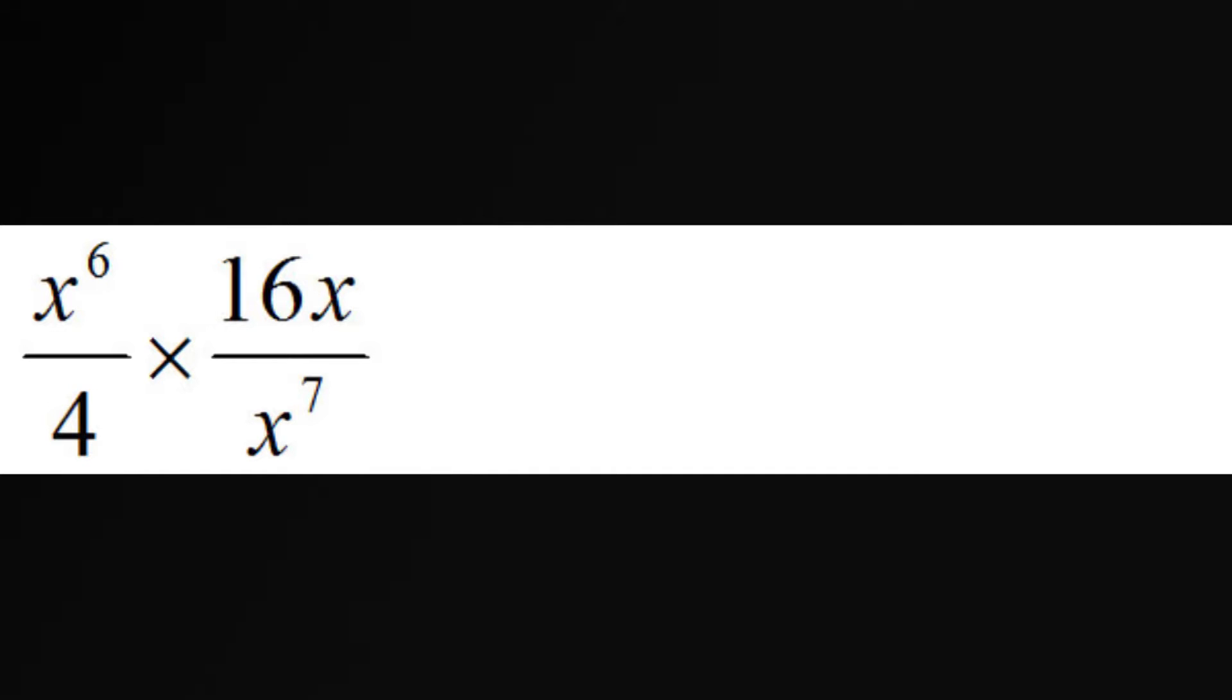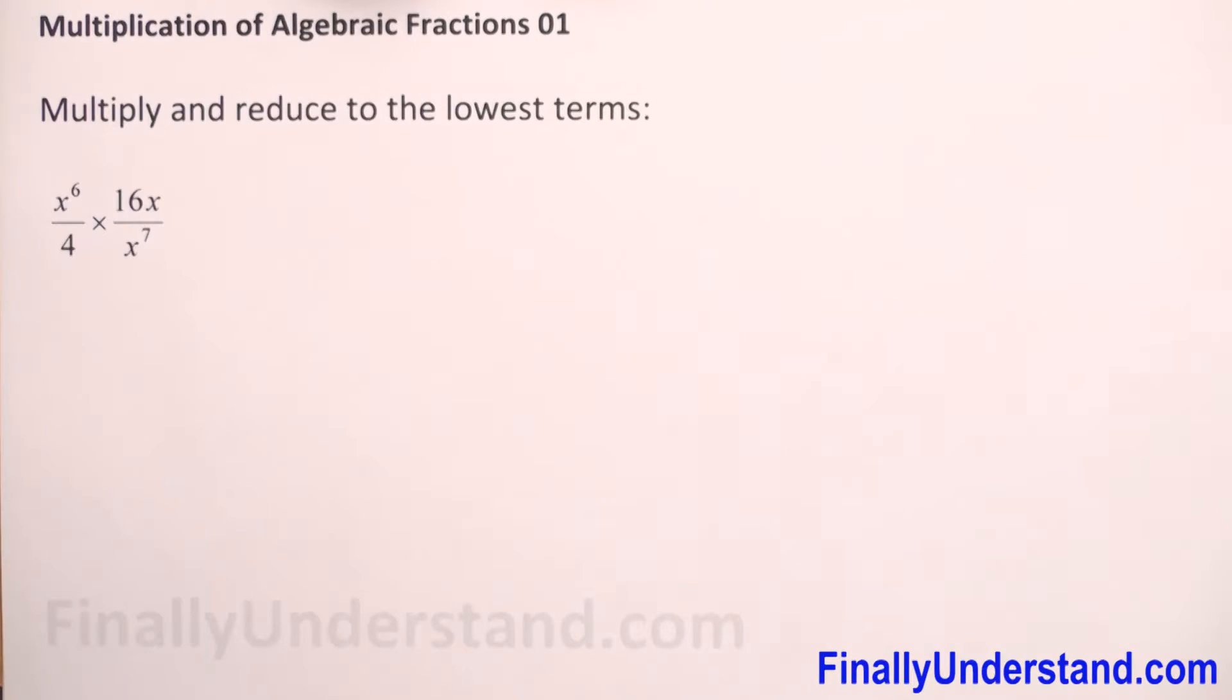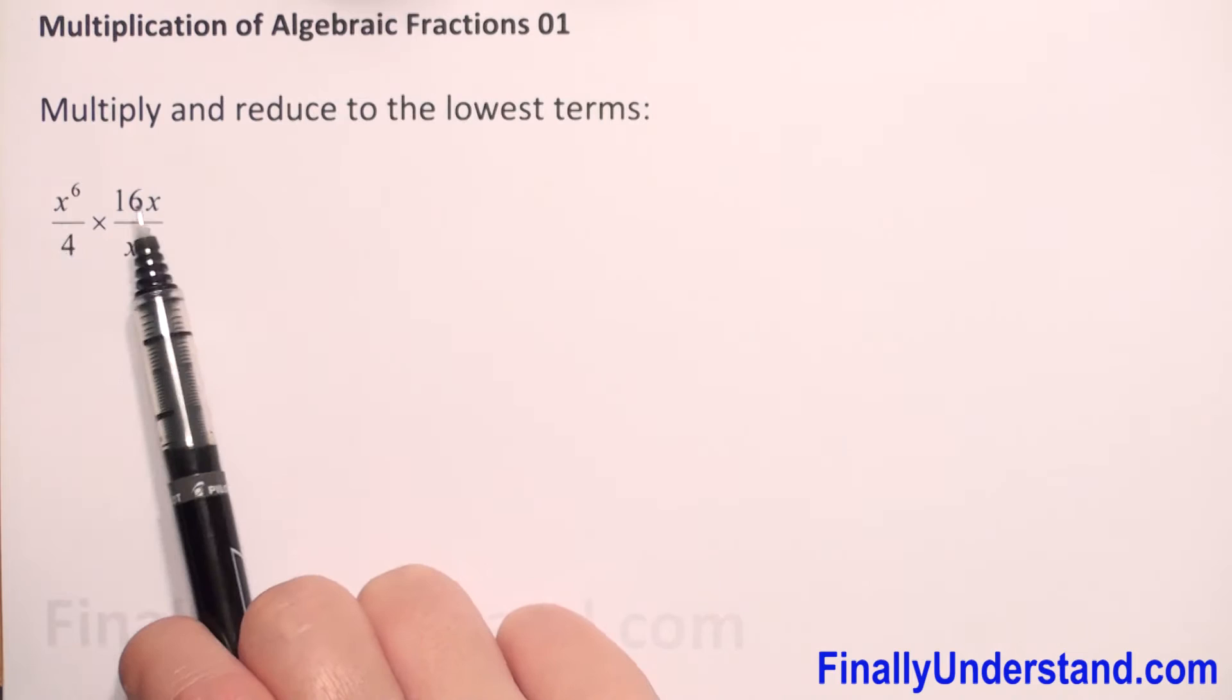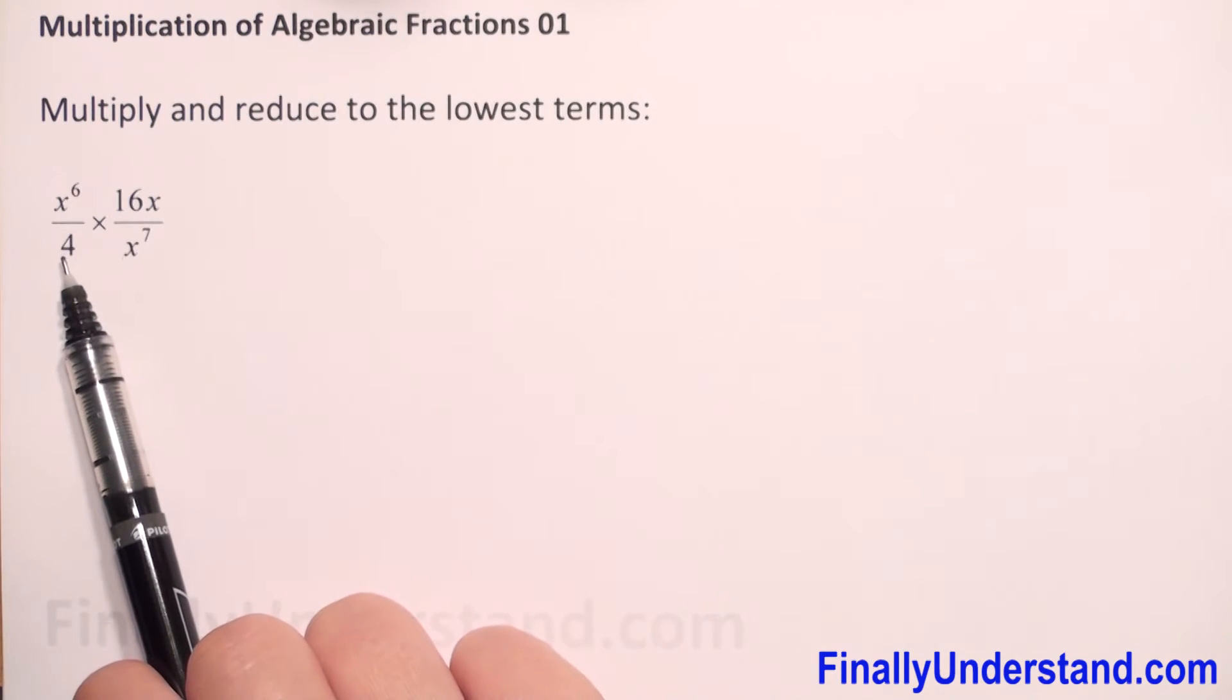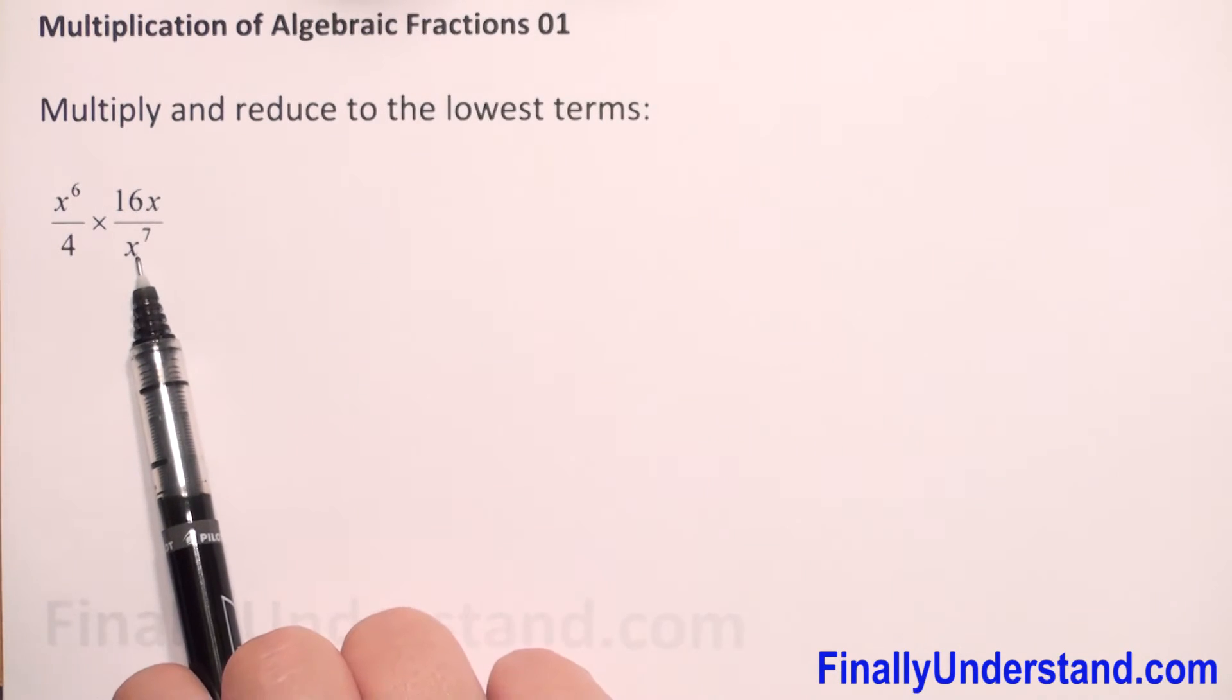We have multiplication of algebraic fractions. How do we multiply algebraic fractions? We do the same as with regular fractions. We multiply numerator times numerator and denominator times denominator.